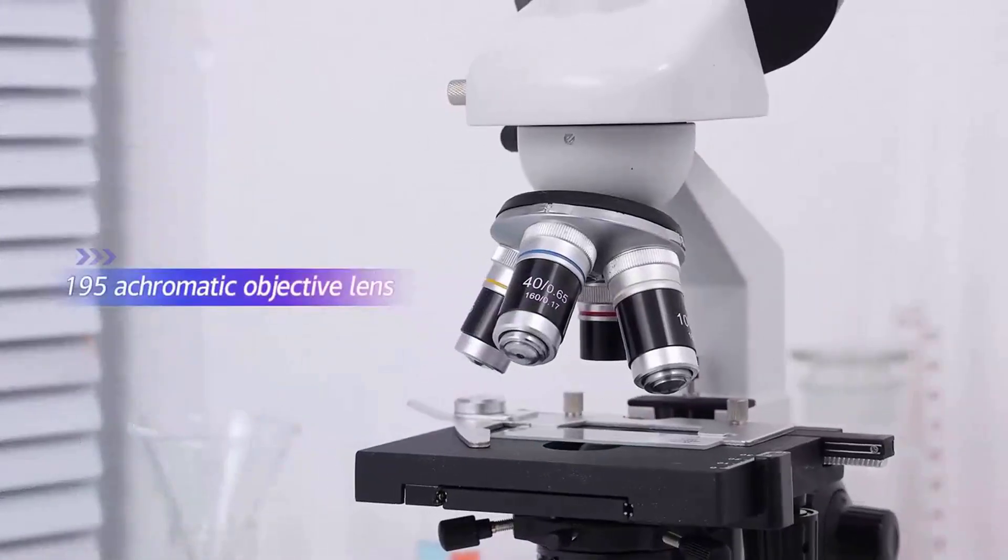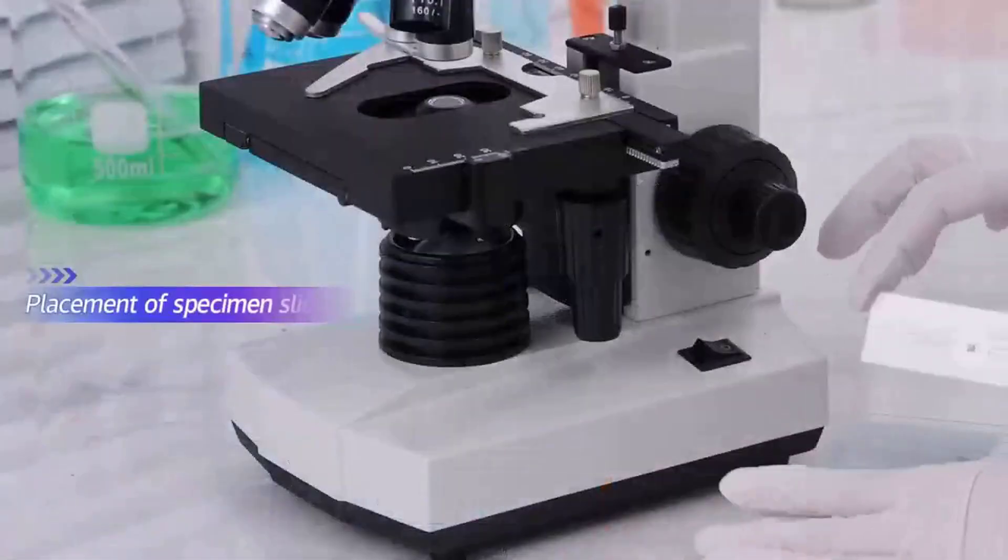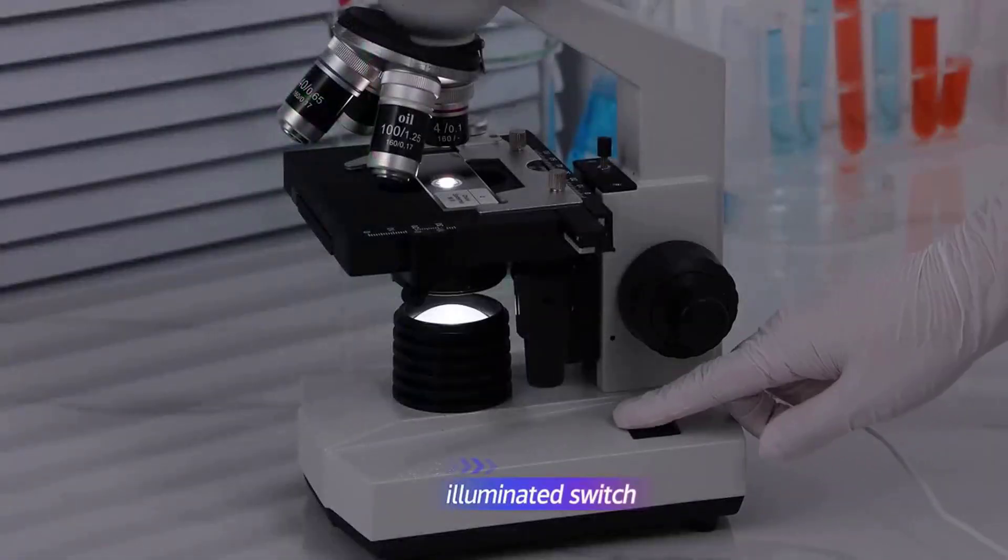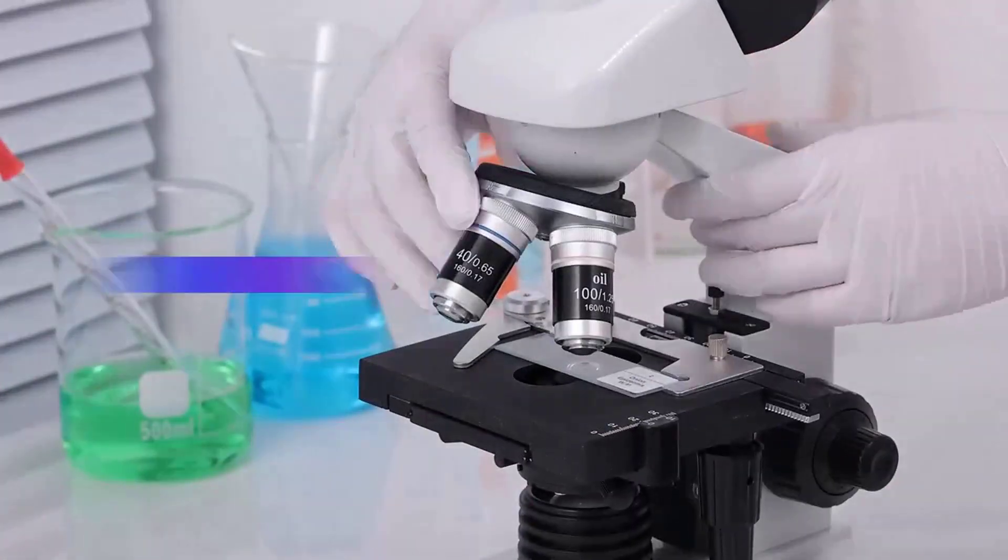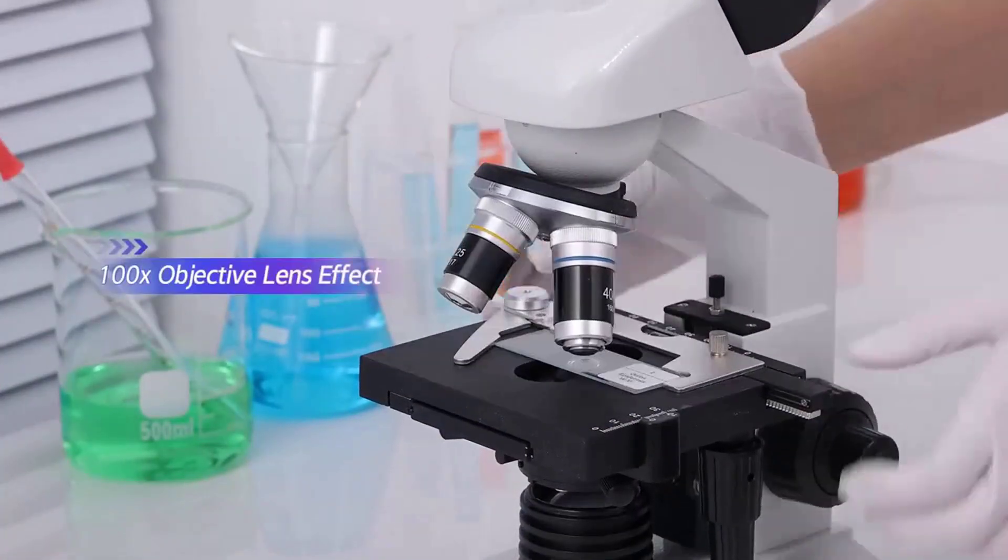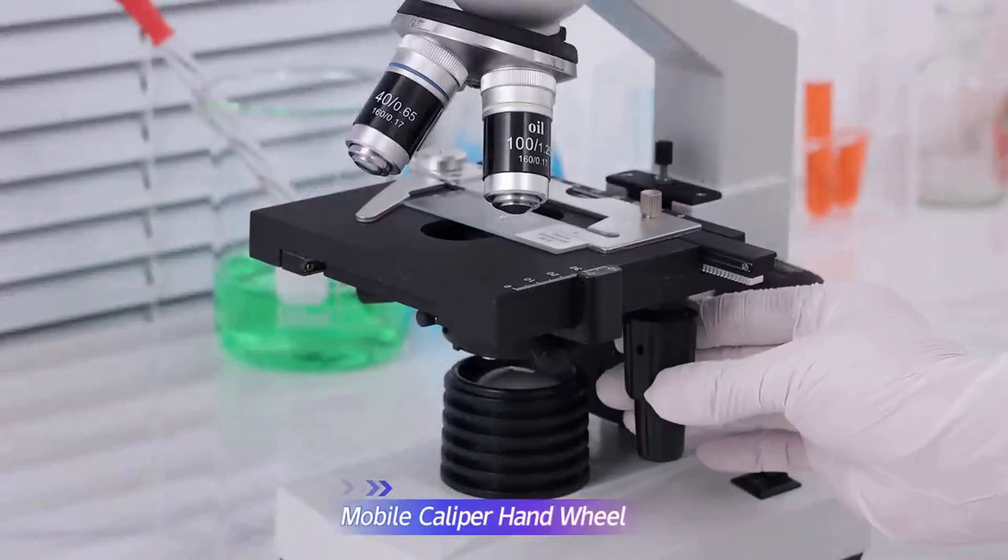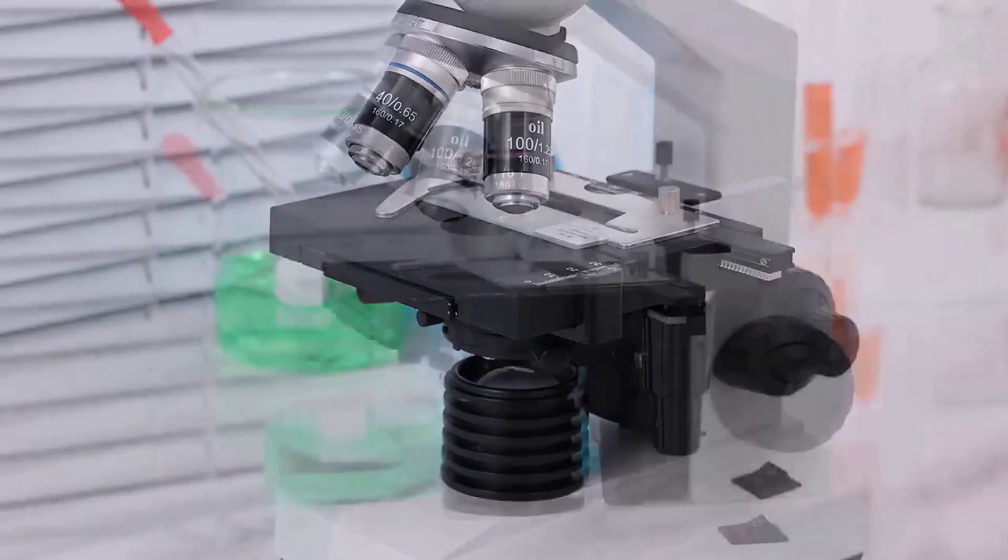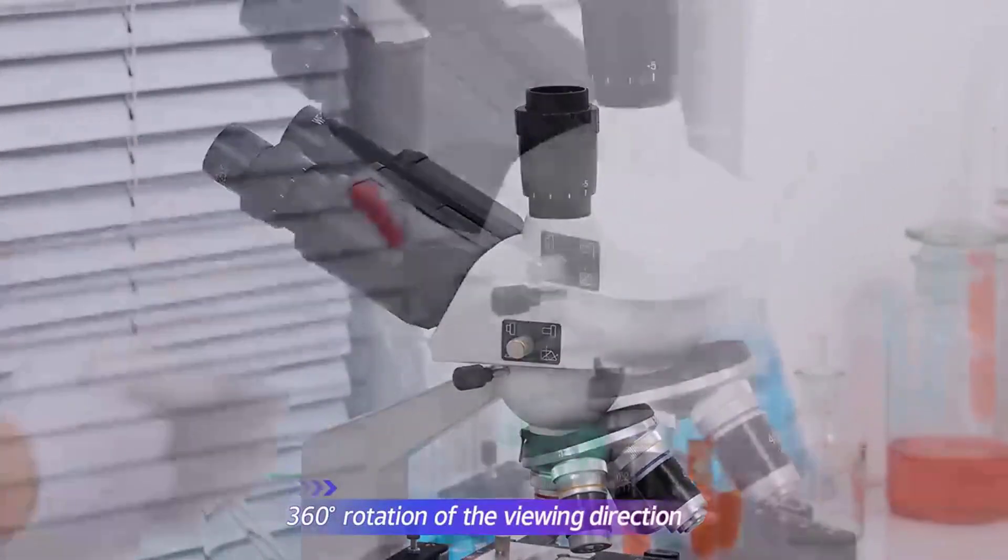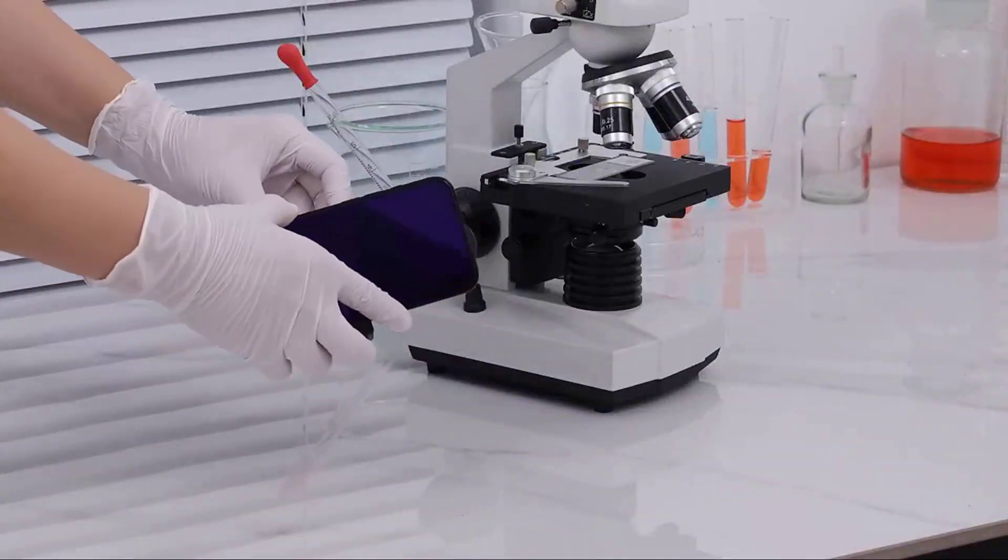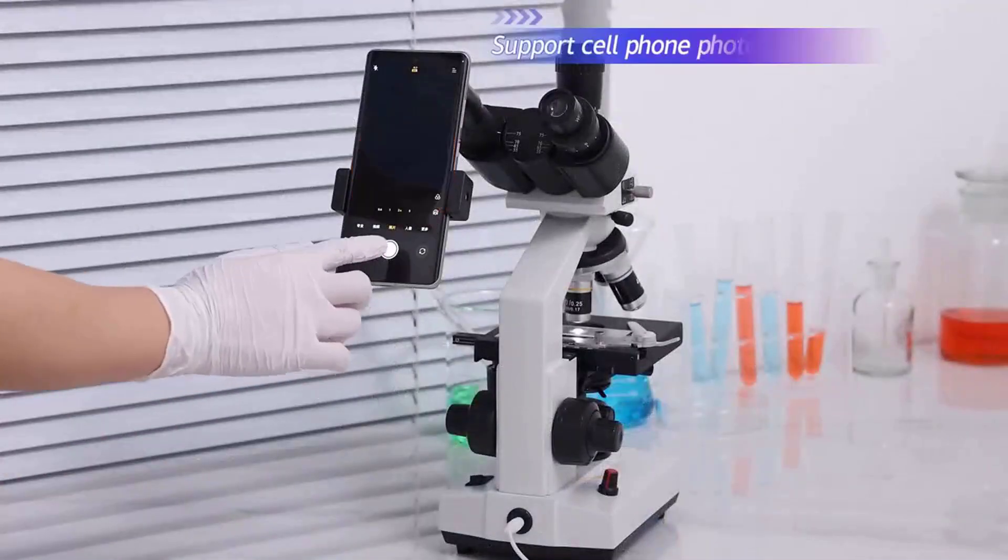What distinguishes this microscope is its superior accessory collection. Unlike basic packages with mediocre supplements, this kit provides high-quality slides, Petri dishes, and essential laboratory tools. When compared to models limited to 2000x magnification, the Wohirsch delivers substantially more powerful viewing capabilities. While those alternatives excel for entry-level use, this microscope addresses more sophisticated requirements. The premium optical components and professional-grade accessories validate its price point, making it an ideal choice for serious laboratory applications or dedicated enthusiasts demanding superior image quality. This instrument excels in delivering professional-grade performance.